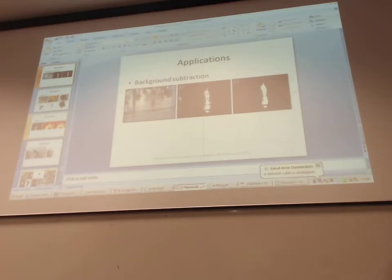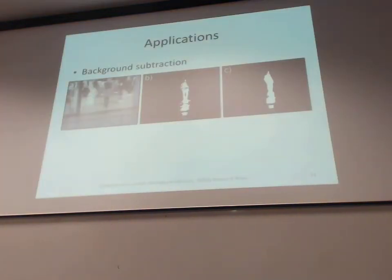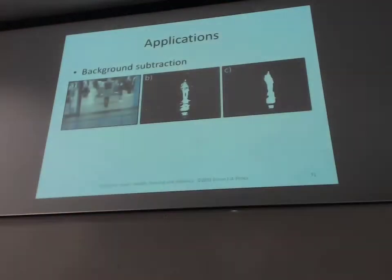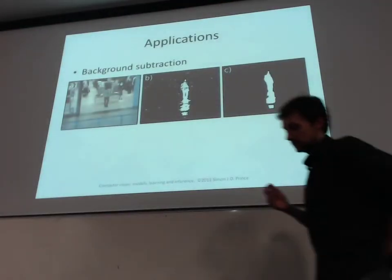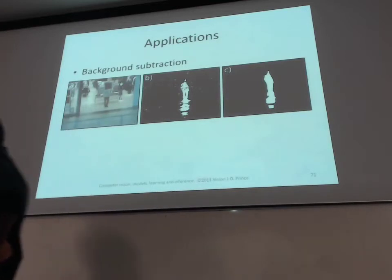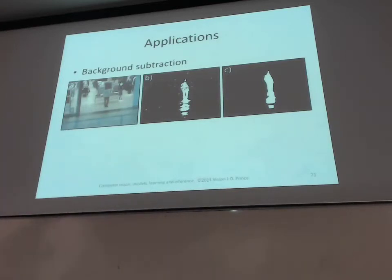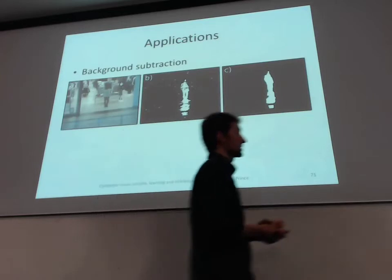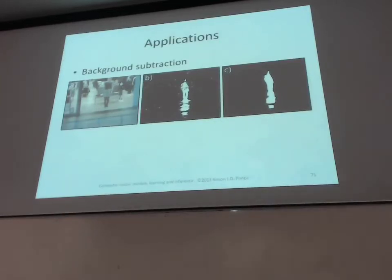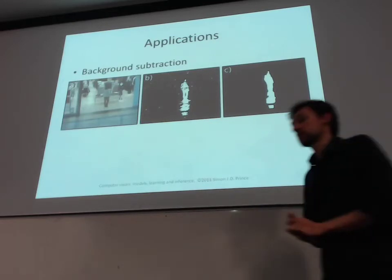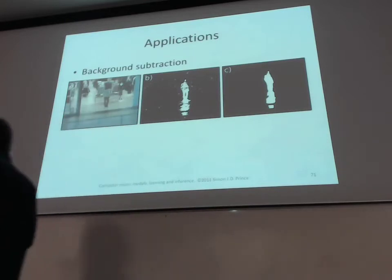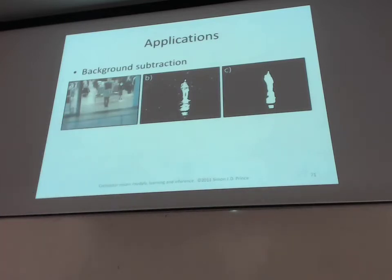We're going to press on with chapter 12. We had said some cost functions are better for us when we're using graph cuts than others. Here's an example of a nice cost function: quadratic costs. It's actually a very straightforward case, and you've seen this kind of example already.